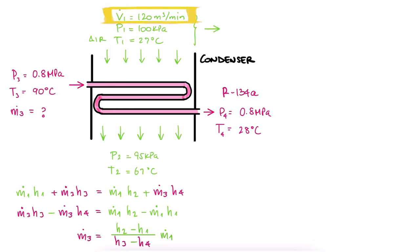Since we have the volumetric flow rate for air, we can find the mass flow rate if we find the specific volume first. And since air can be considered an ideal gas, we find the specific volume using the ideal gas equation.